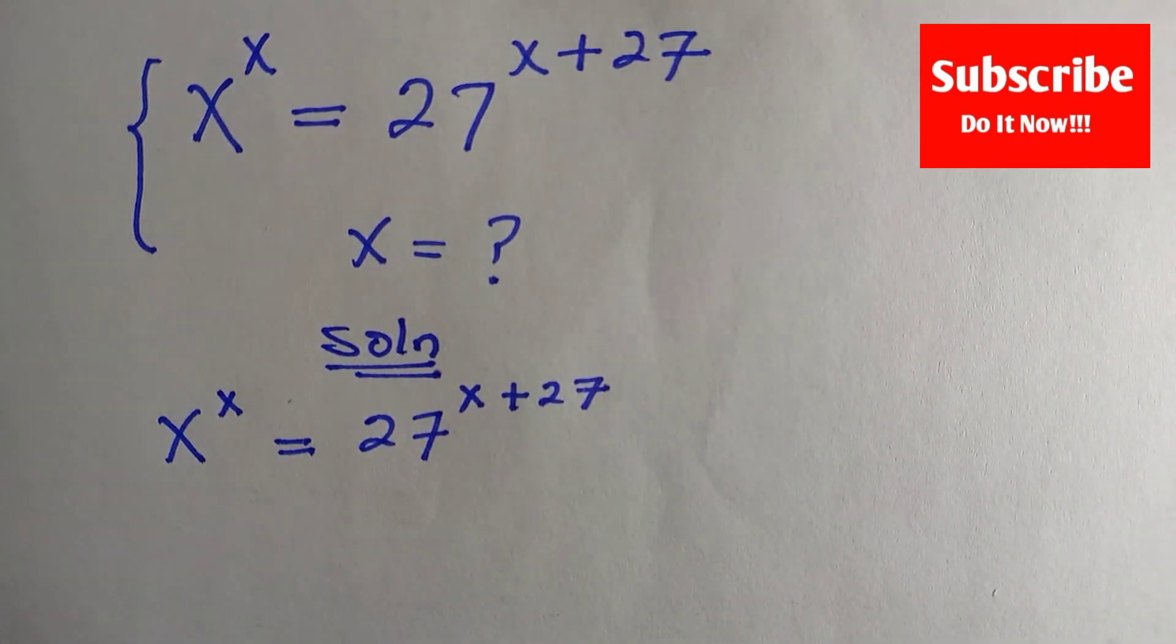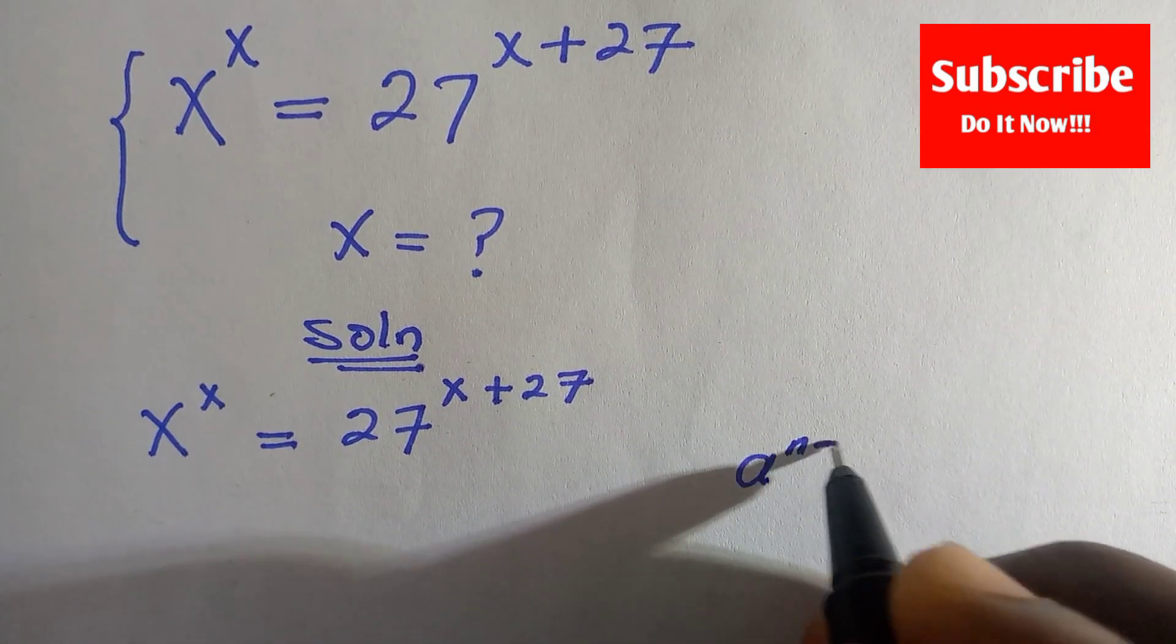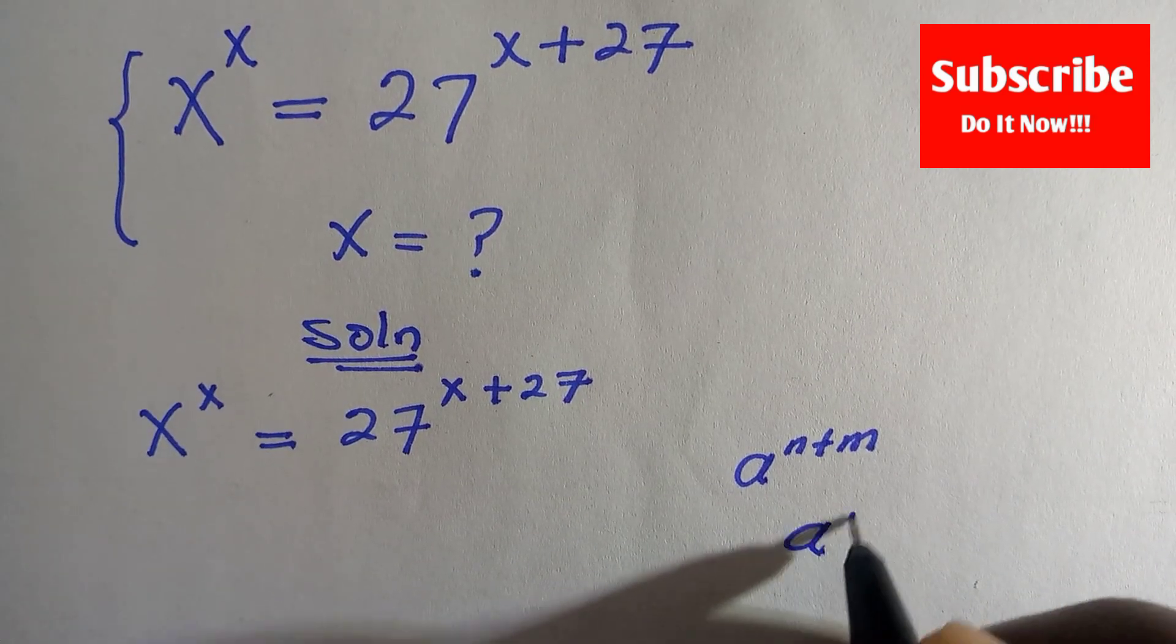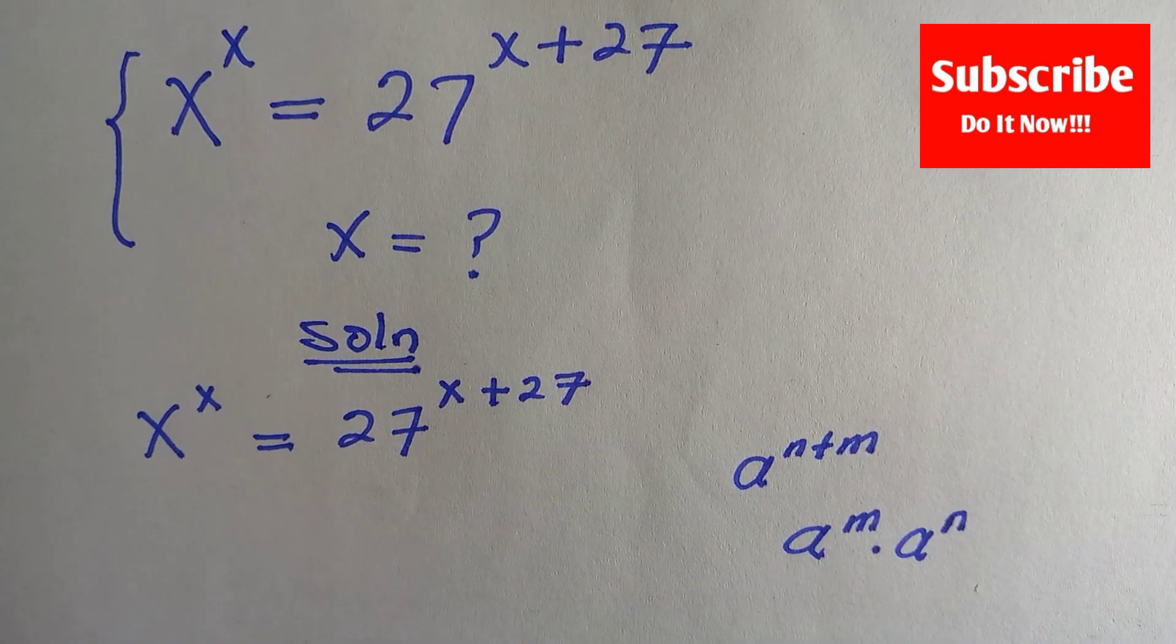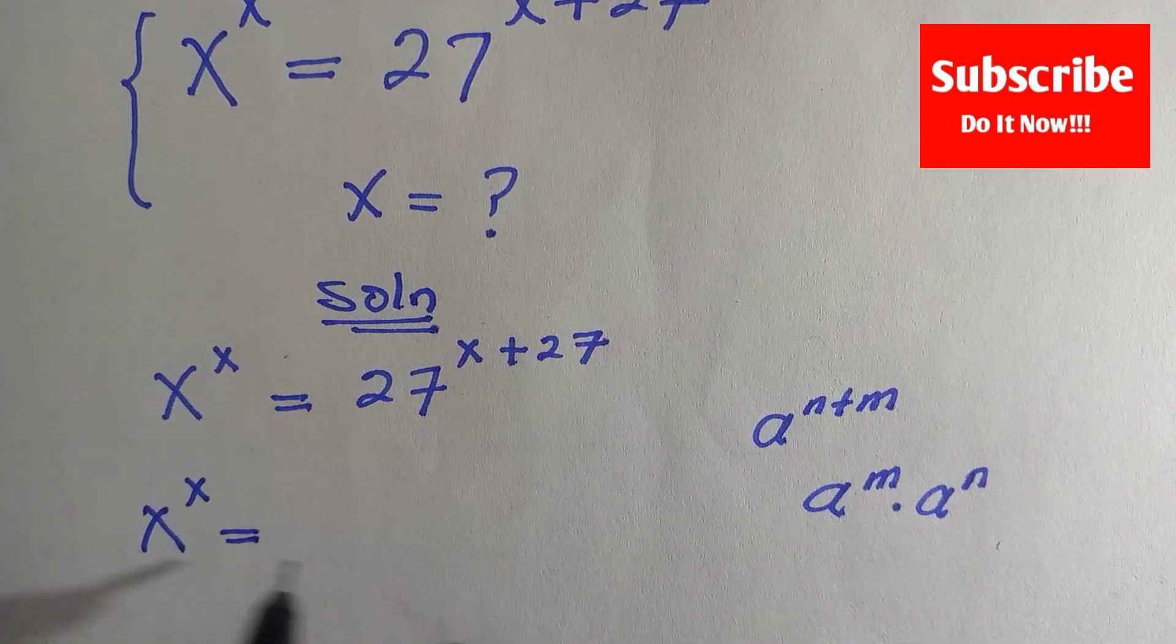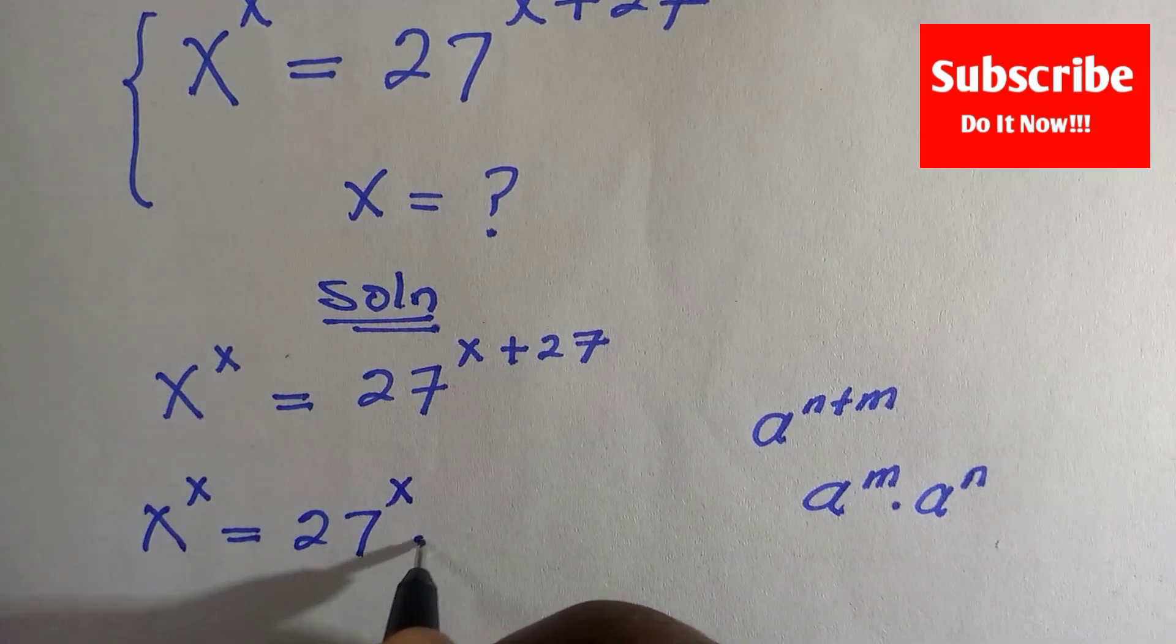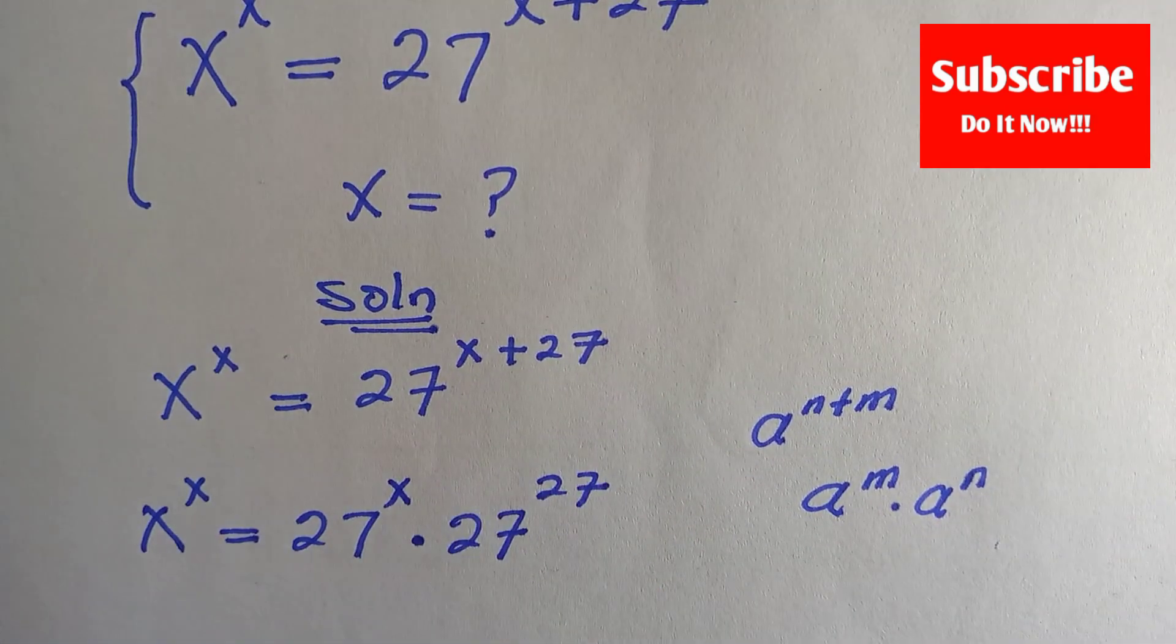We can separate this using the law of indices. If you have a^(n+m), which can be written as a^m × a^n, by applying it in this question we are going to have x^x = 27^x × 27^27, where we take the power of x and the power of 27.